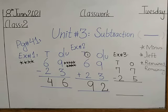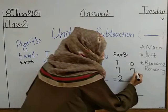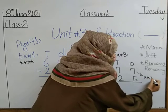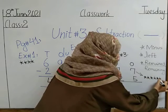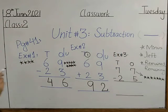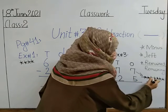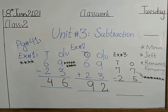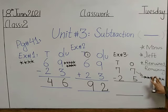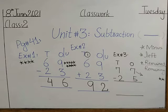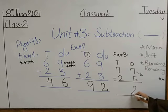We will subtract 7 minus 5. Draw seven stars — 1, 2, 3, 4, 5, 6, and 7. Then cut 5 stars from 7: 1, 2, 3, 4, and 5. You can cut or remove the stars if you have an eraser. How many remaining stars do we have? Moise, you tell me — good, 2. So we will write 2 in the ones place value.